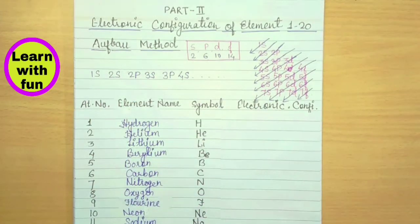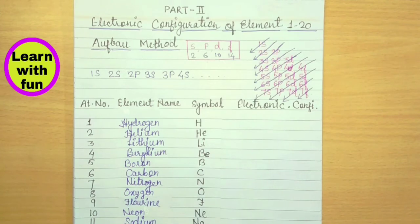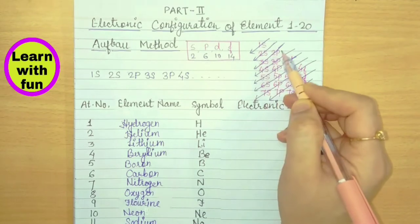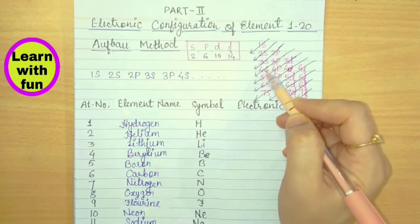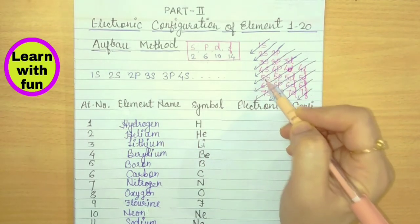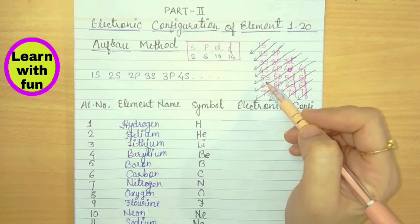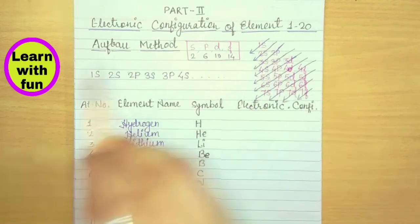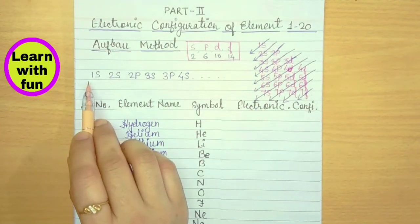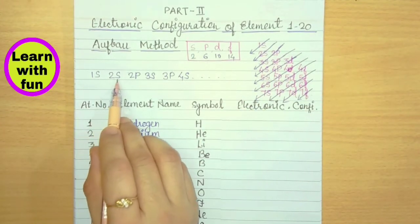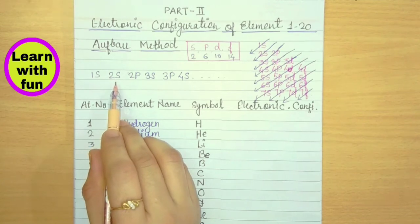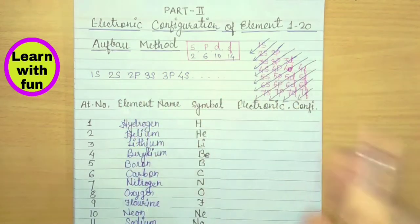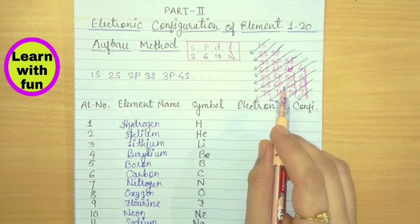This formula we will apply for the electronic configuration. The order is 1S, 2S, 2P, 3S, 3P, 4S, 3D, 4P, 5S. Electrons fill from the lowest energy level to the highest energy level — 1S has the lowest energy, followed by progressively higher energy subshells. This is the Aufbau method for electronic configuration.